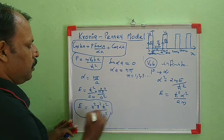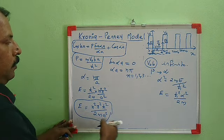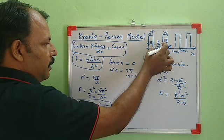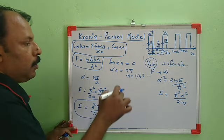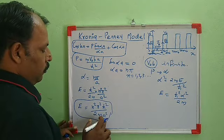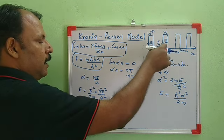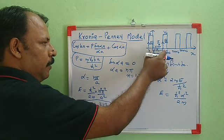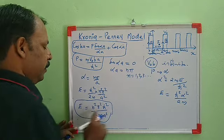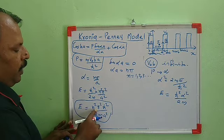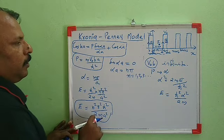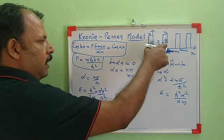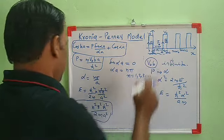This energy equation is already known for a particle in a box, where the box has dimension a of the order of atomic size. In this case, the particle is confined within a box of atomic dimension and has discrete energy values, since E is proportional to n². So it will have discrete energy levels but will be confined to a region of atomic dimension.